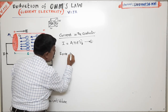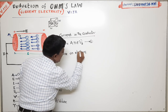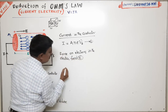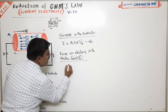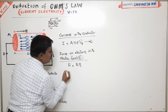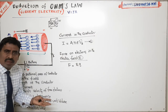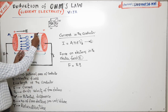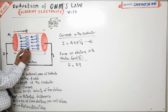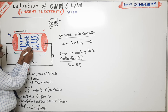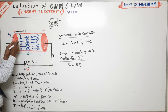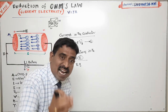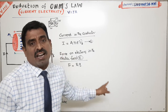Let us assume the initial velocity of these electrons is zero. The reason is that while they are moving, these electrons collide with positive ions present in the metal. After each collision, their velocity resets and starts again from zero, then increases again until the next collision. So we assume the initial velocity of these electrons is zero.